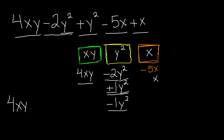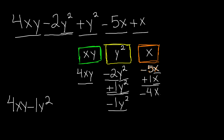For the x category, we have negative 5x and positive x. Since x has no written constant, it's 1. x and x are the same, so I bring x down. Negative 5 plus positive 1 gives us negative 4x.